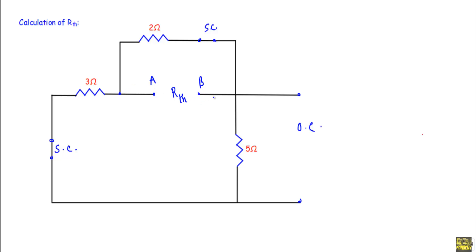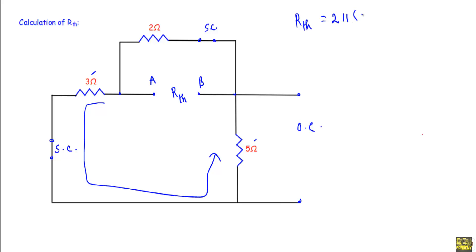After replacing voltage sources with short circuits and current sources with open circuits, we get a simplified circuit. This is our terminal A and this is terminal B. With respect to A and B terminals, you will see within this branch, this 5Ω and this 3Ω resistance are connected in series, and their equivalent series resistance is connected in parallel with this 2Ω resistor. Therefore R_th will be equal to 2Ω in parallel with 8Ω, which equals 2 × 8 over 2 + 8, giving R_th = 1.6Ω.